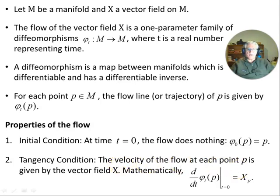The tangency condition. The velocity of the flow at each point p is given by the vector field X. Velocity in inverted commas is just the tangent vector. It's mathematically d/dt phi_t of p. The value at t equals zero is X_p.